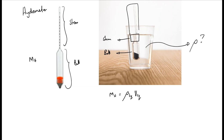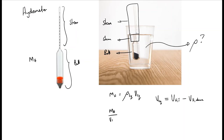A certain portion of the volume of the stem is protruding above the liquid level and is thus not displacing any liquid. Because the total volume of the hydrometer is known and the volume of the hydrometer above the liquid level can be calculated, this can be used to calculate the volume of the liquid displaced. Once the mass of the hydrometer is known and the volume of the liquid displaced is known, one can calculate the density of the liquid.